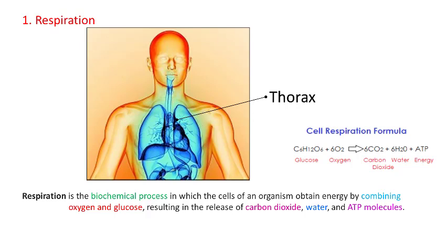Now the question is what is an organ? You have studied that cell is the basic unit of life. Group of cells perform a specific function and they form tissues. Tissues of different types work together to form an organ. Group of organs work together to perform a specific function, called an organ system. Respiration is one such process — it is part of an organ system.